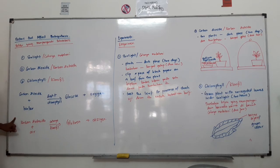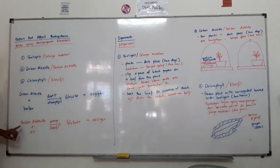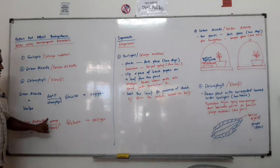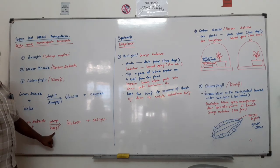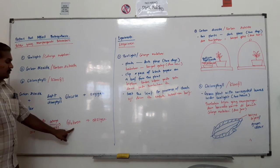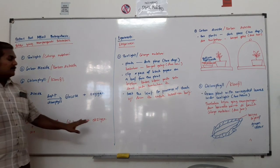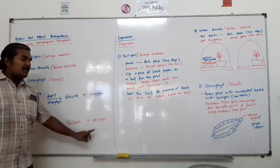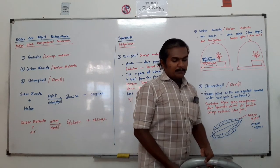Carbon dioxide dan air ini adalah dua komponen yang penting untuk proses fotosintesis. Tumbuhan akan mendapatkan carbon dioxide daripada atmosfera, dan ia akan memasuki daun melalui liang stoma di bawah epidermis daun. Air diserap oleh akar daripada tanah. Cahaya matahari merupakan tenaga yang diperlukan, dan chlorophyll membantu menyerap cahaya. Glukosa adalah makanan yang dibuat, dan oksigen dilepaskan ke atmosfera untuk kegunaan organisma lain.